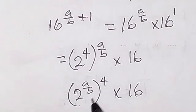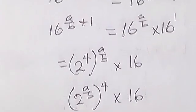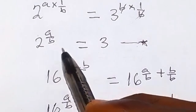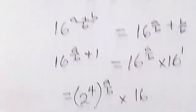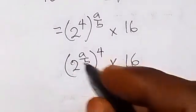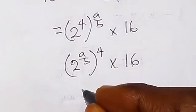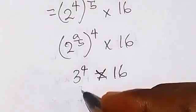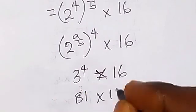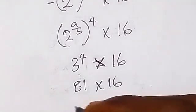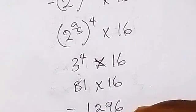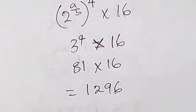Then we know that our 2 raised to power (a over b) is 3 from what we have done here. We can now see that 2 raised to power (a over b) is 3. So instead of writing 2 raised to power (a over b) there, we can just put 3 here. So that's 3 raised to power 4 now. And that gives us 3 raised to power 4, of course that's 81, and that's 81 times 16, and that gives us 1296.